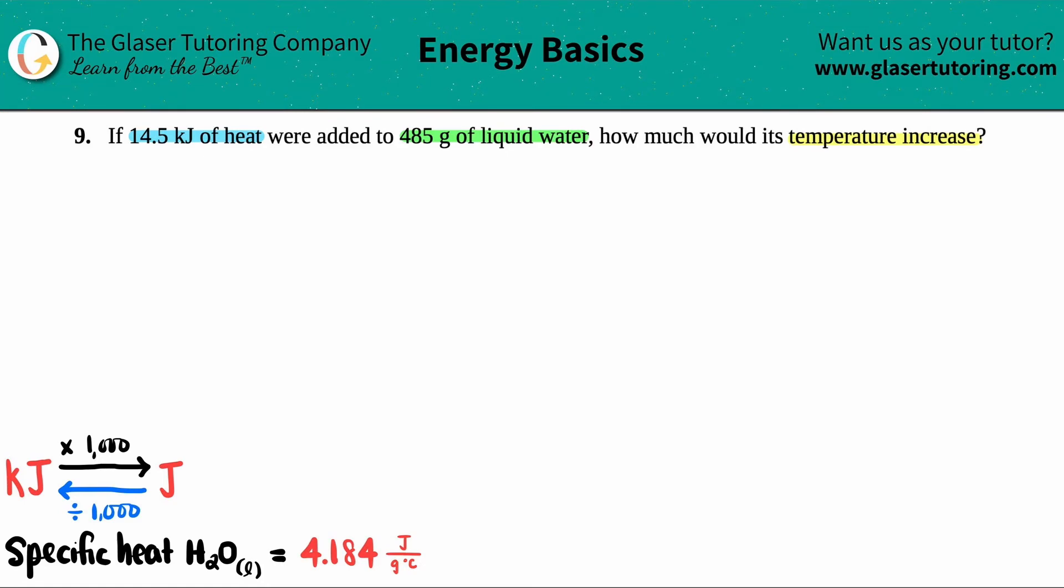So let's see, if 14.5 kilojoules of heat, right? They gave me a heat value and I run through all of the units that I know up until this point in the chemistry course. Heat is a Q value. So I know that Q equals 14.5 kilojoules. Now they're saying that we have this amount of heat and it was added to 485 grams of liquid water. Gram is a unit of mass. So I have an M value. So I write that m equals 485 grams.